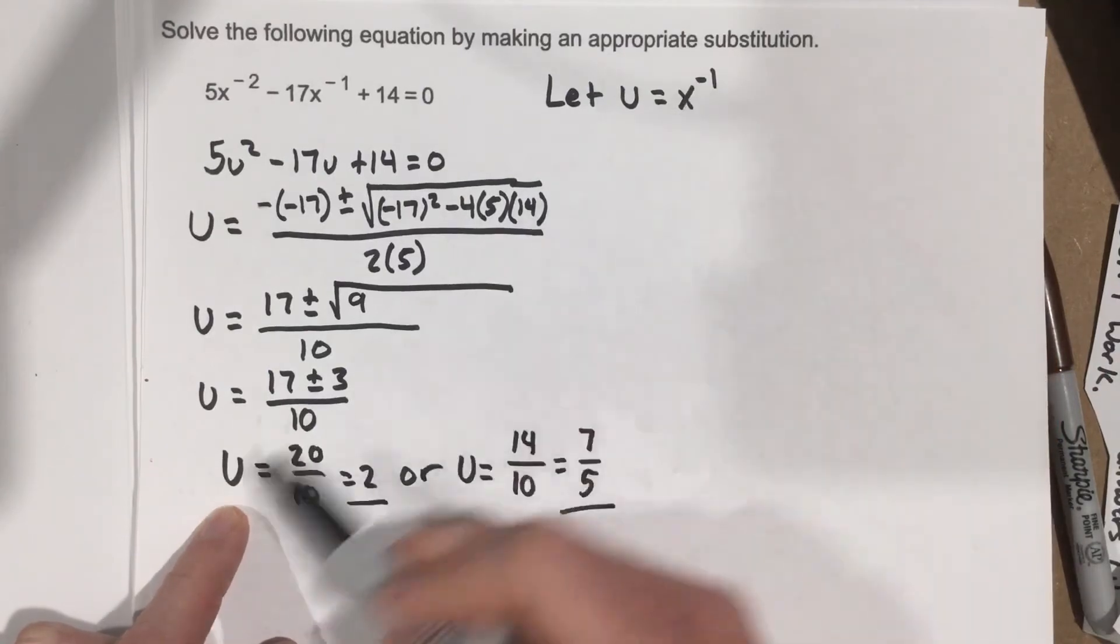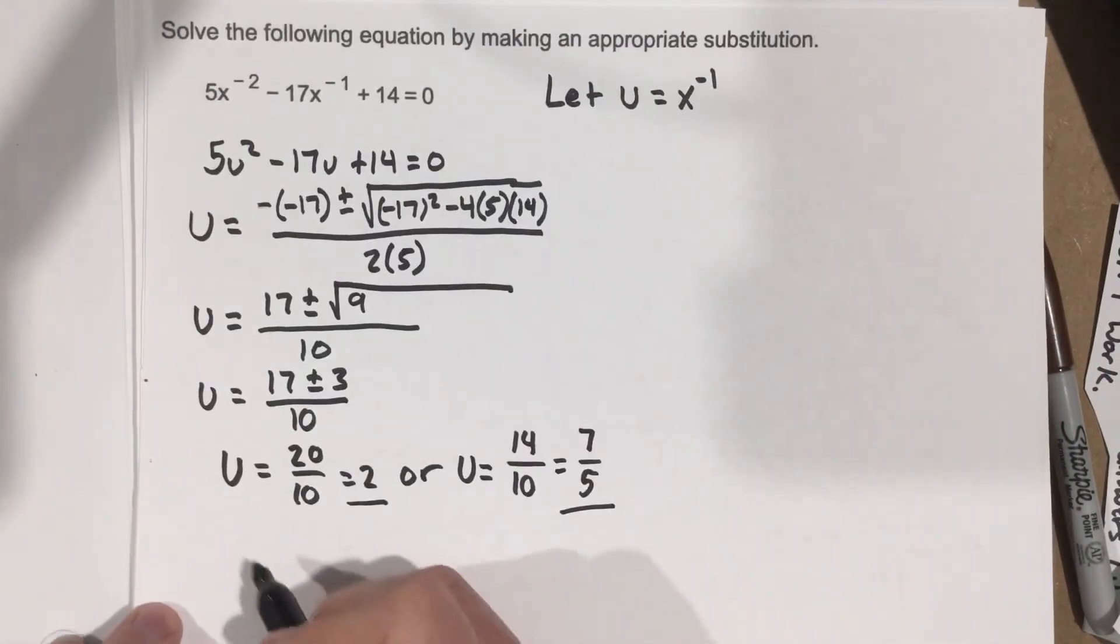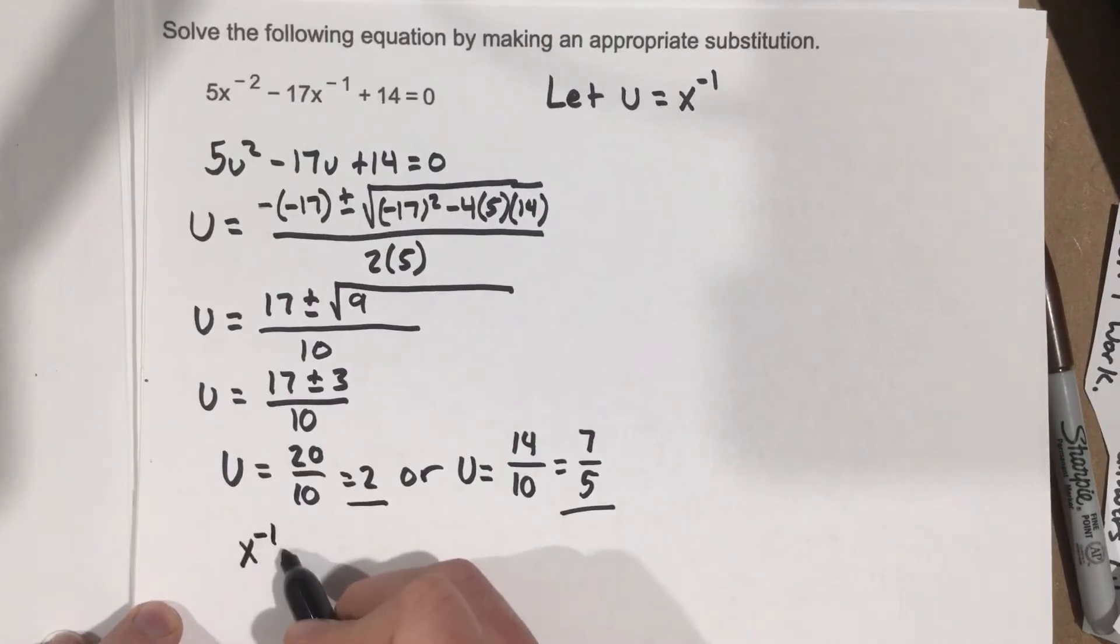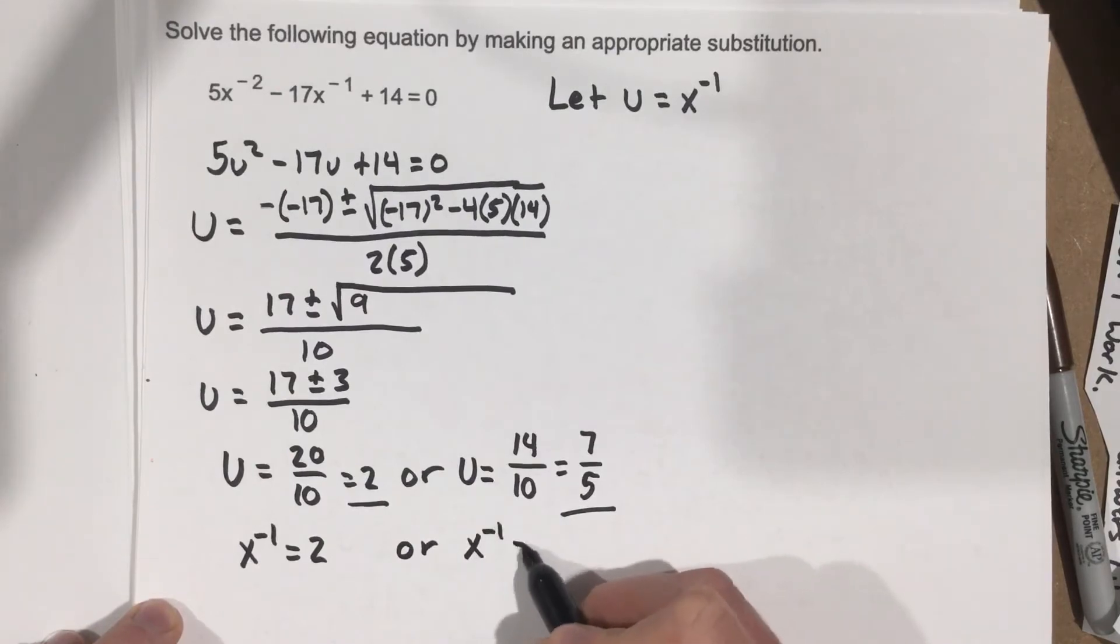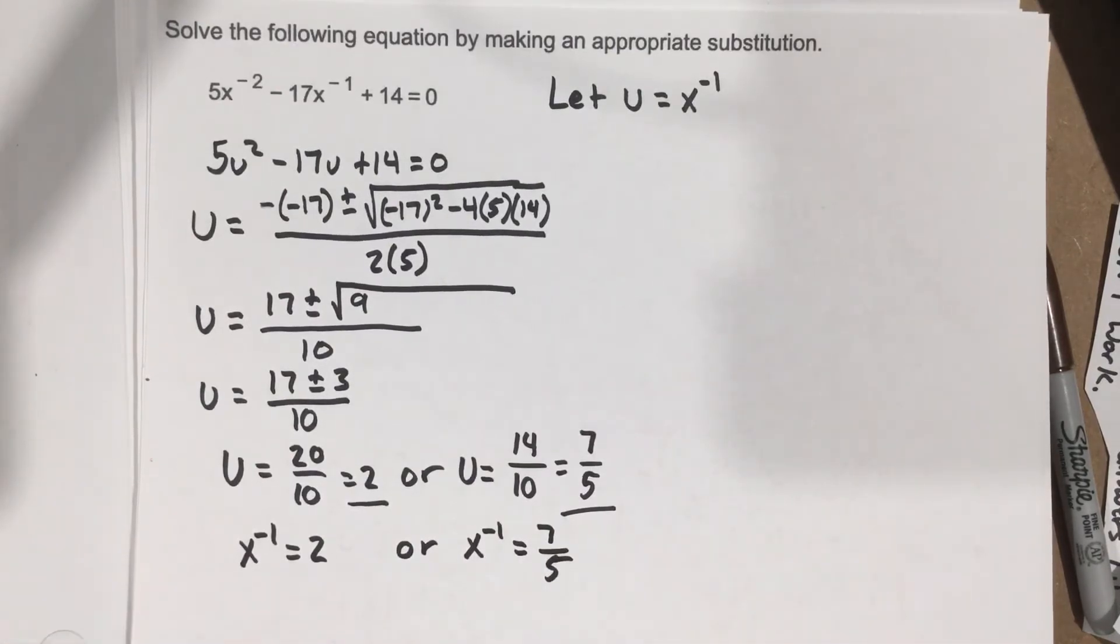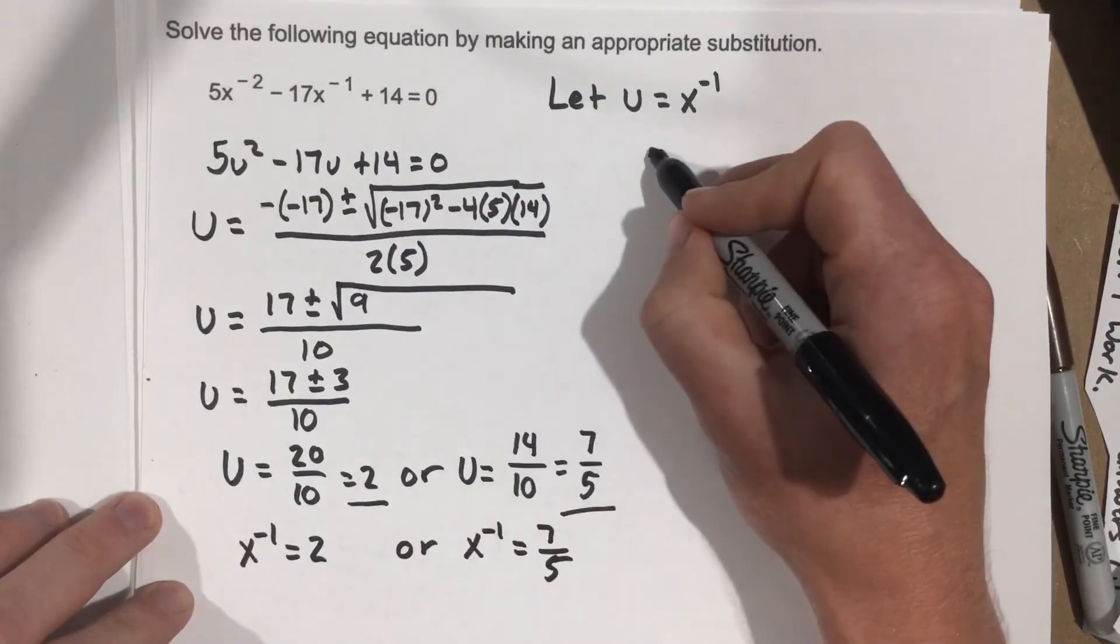We can substitute x to the negative 1 then in for u for each of these. So I can say x to the negative 1 equals 2, or x to the negative 1 equals 7 over 5. Now I can solve here. So I can say that x to the negative 1, and I'm going to rewrite these up here.